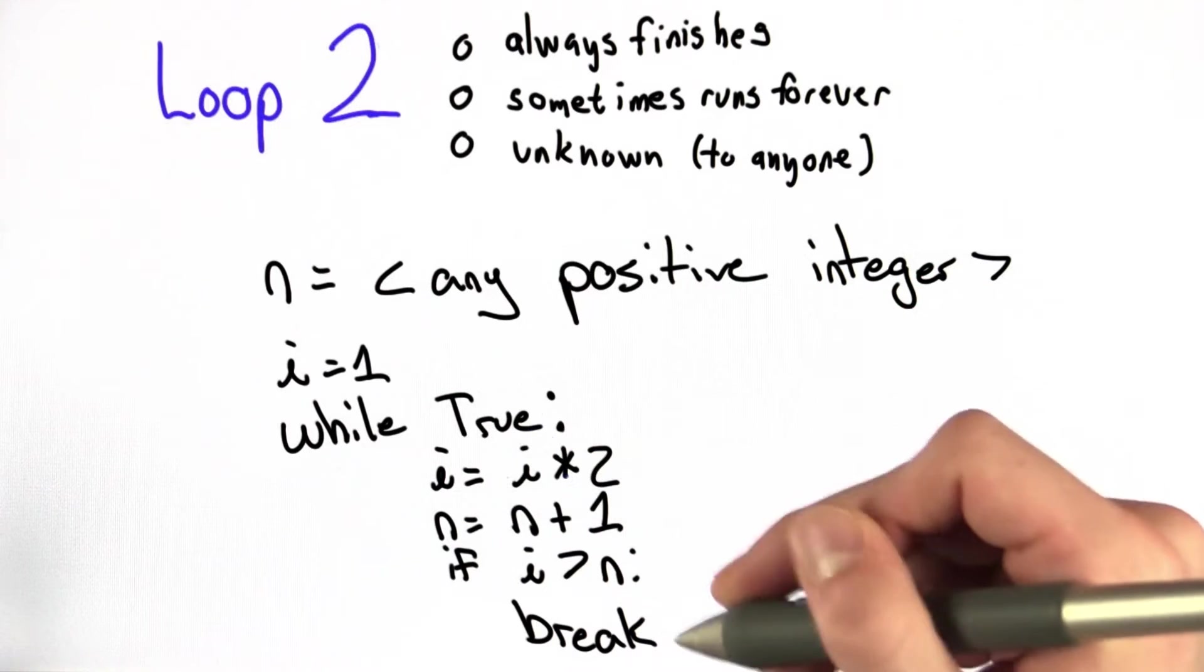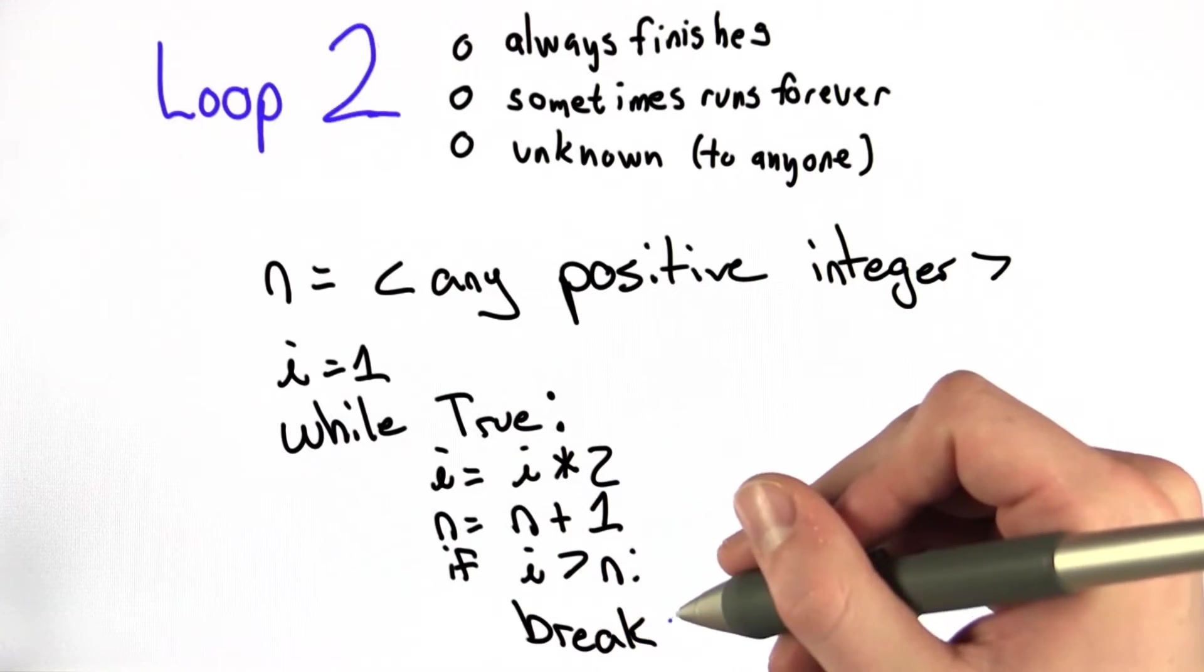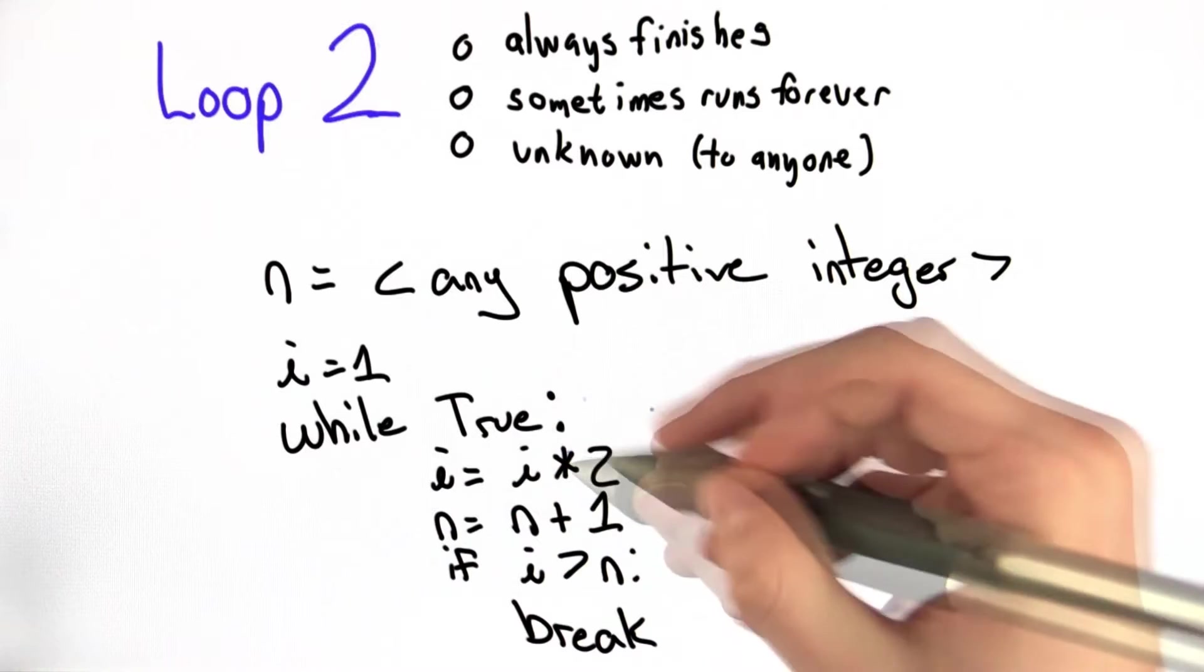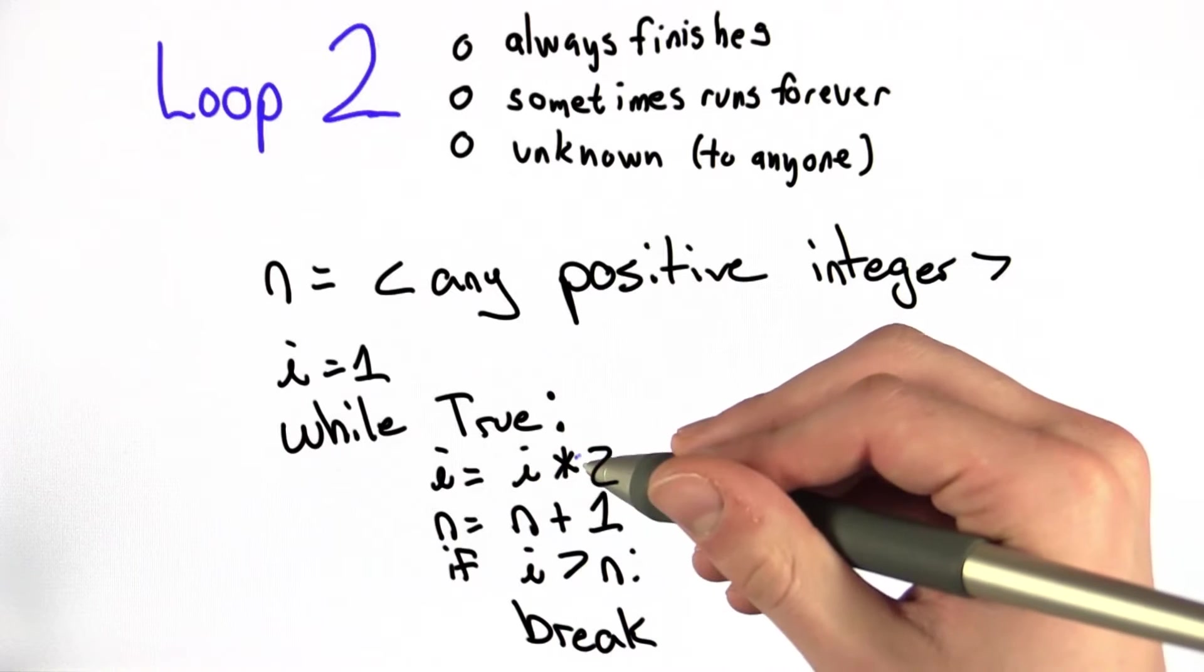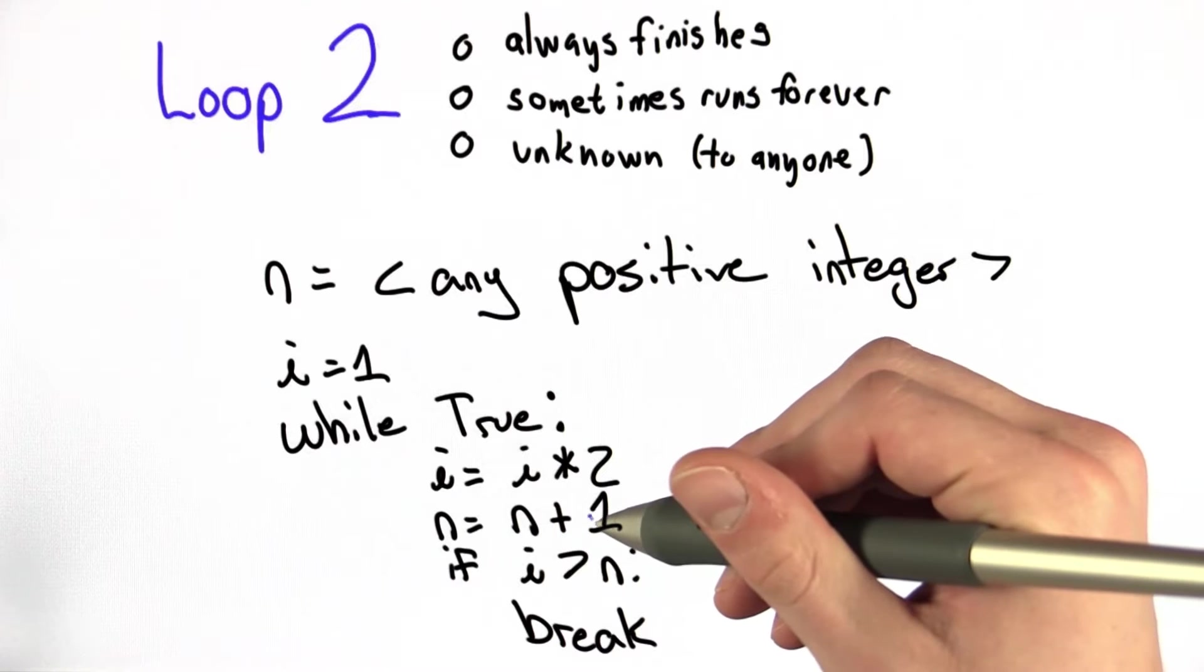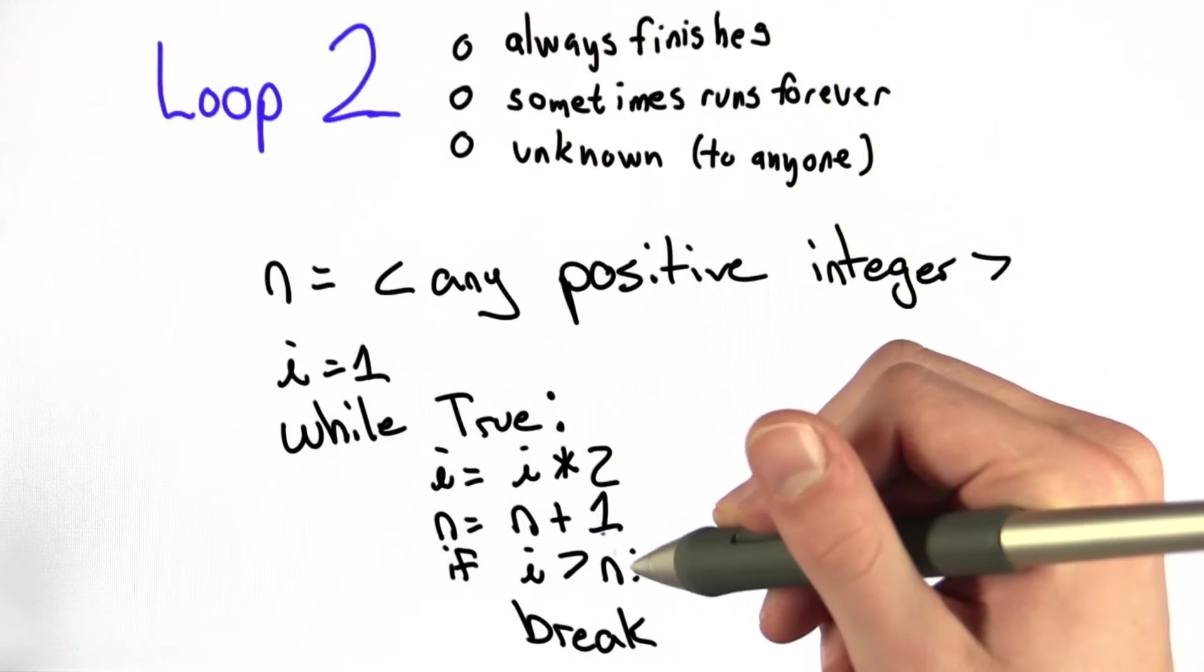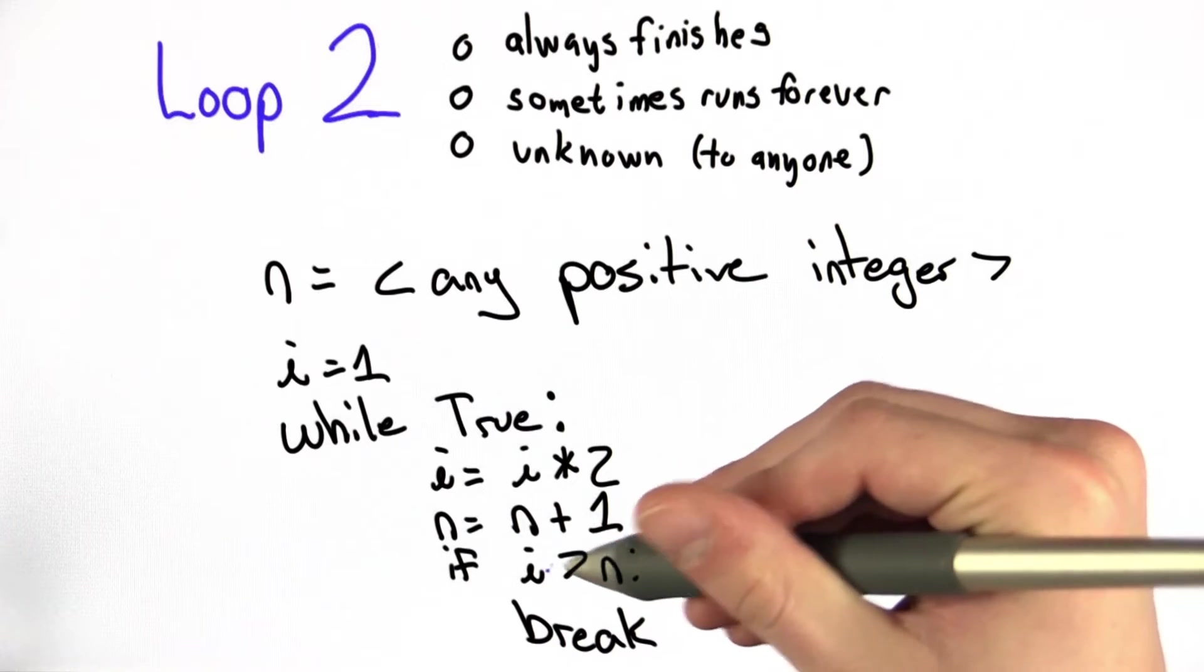It will continue forever until we trigger the break. So let's look at the inside. i at every iteration doubles, and n at every iteration increases by 1. The point at which we break is when i becomes greater than n.